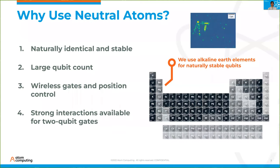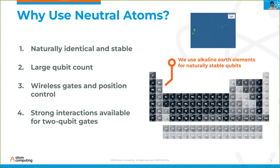So why are we so excited about neutral atom qubits at Atom? Here are my top four reasons. Reason number one: atoms occur identically in nature and they're very stable. What this means is you don't have to worry about manufacturing your qubits, and you can be sure that if you treat your qubits well, they will be stable and give you long coherence times, as I'll show later in this talk.